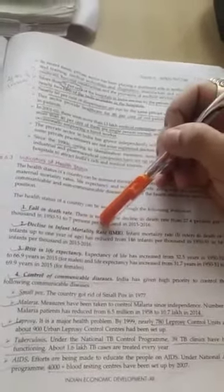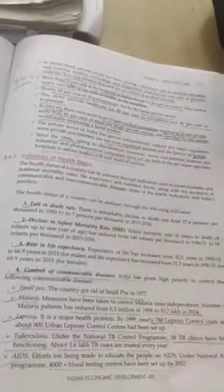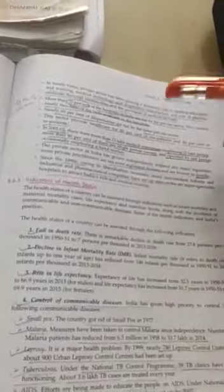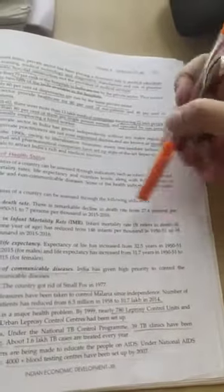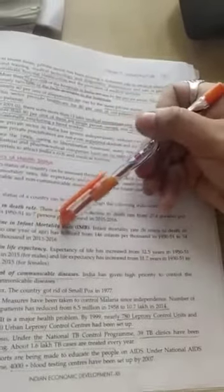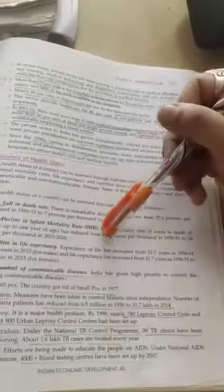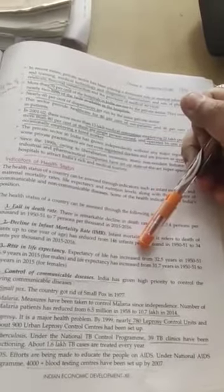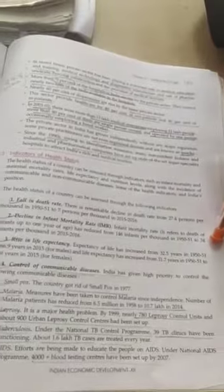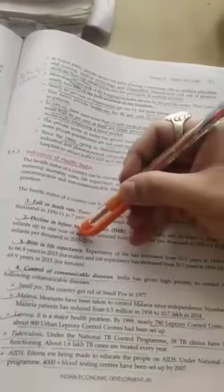Decline in infant mortality rate. What happens if a child dies before 1 year old? That is the infant mortality rate. So the infant mortality rate refers to the death of infants up to 1 year of age. It has reduced from 146 infants per thousand in 1950-51, but now it's 34. Which year is now? We don't know 2020 data, but it's 2015-16 data.